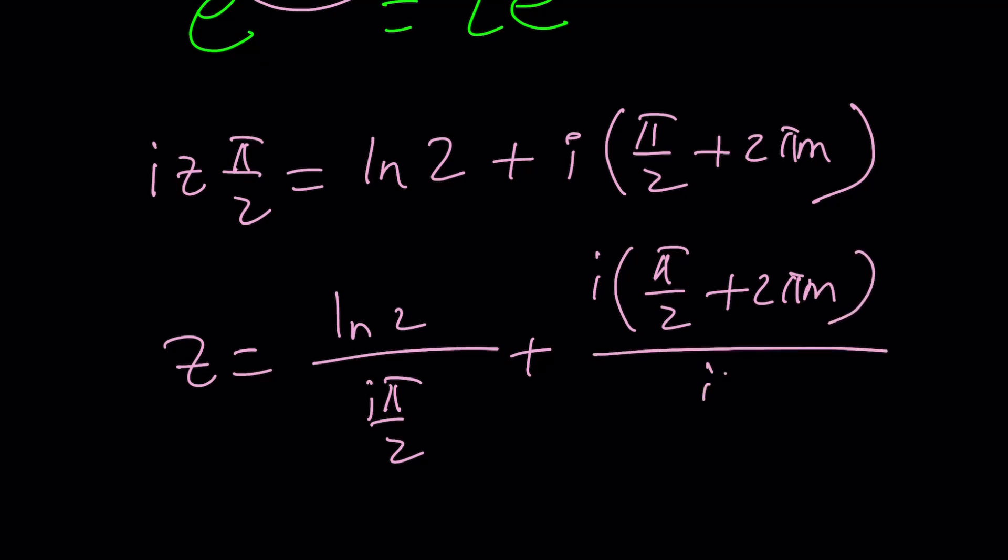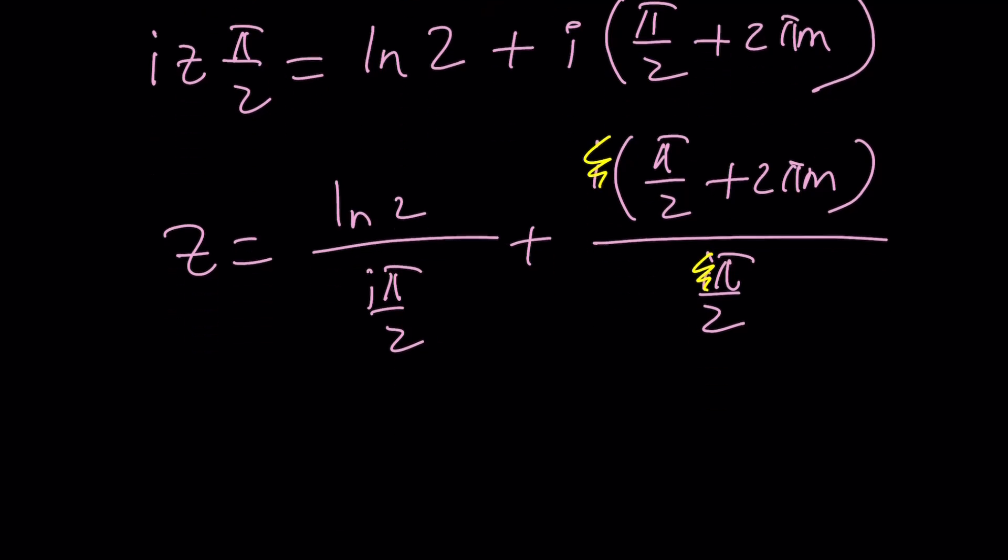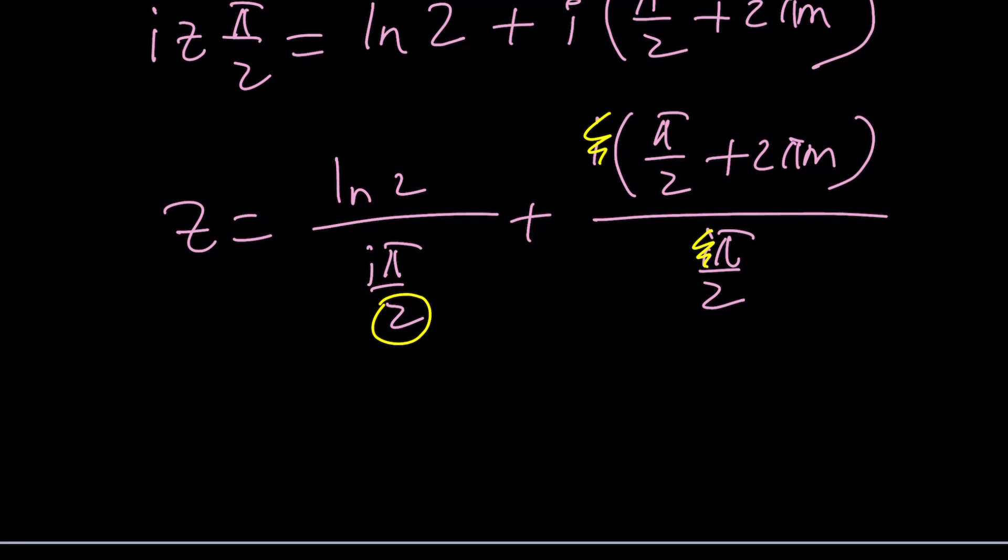And then when you multiply or divide this by i pi over 2, you can kind of divide it like this. Obviously, i is going to cancel out here and here. And then pi is also going to cancel out. We're going to get to that. But we can flip and multiply by 2. So that's going to be 2 ln 2 divided by i pi.